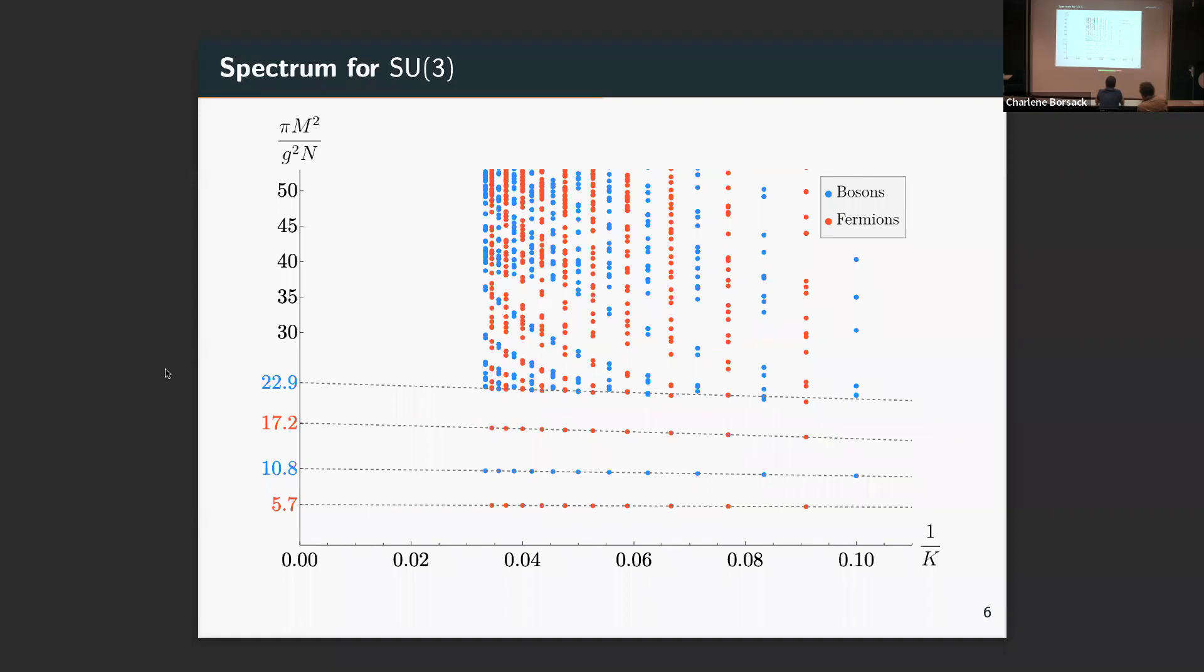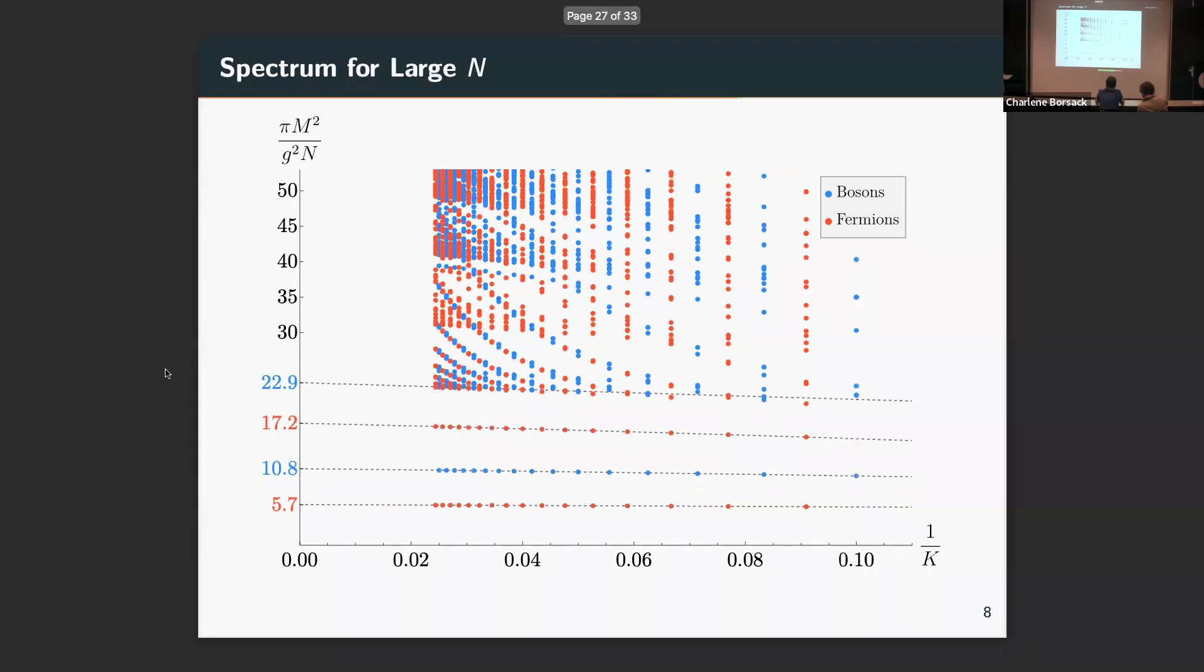We can do this for SU(3). We can also do it for SU(4), and I'll show you that as well. Looks quite similar. Exactly the same values of these bound state masses. Exactly the same value of the continuum up to the resolution of this plot. And in fact, if we go all the way to large N using previous data computed for large N, still the bound state spectrum appears to be the same. These two fermions, a boson, and then the continuum beginning at 22.9.